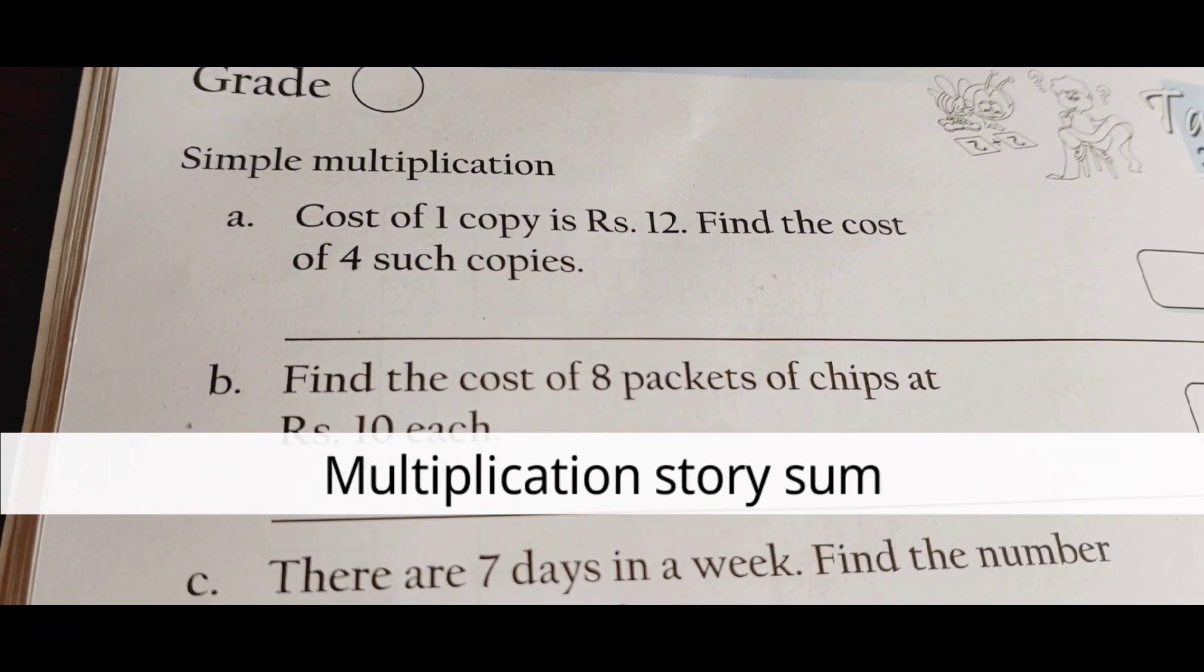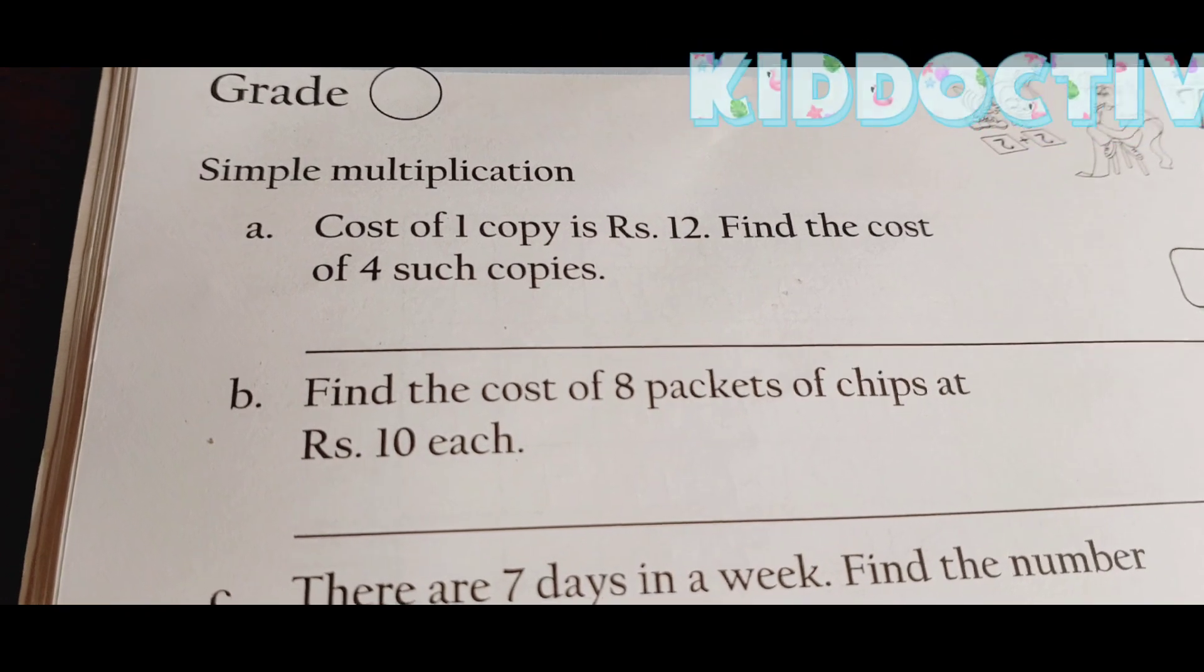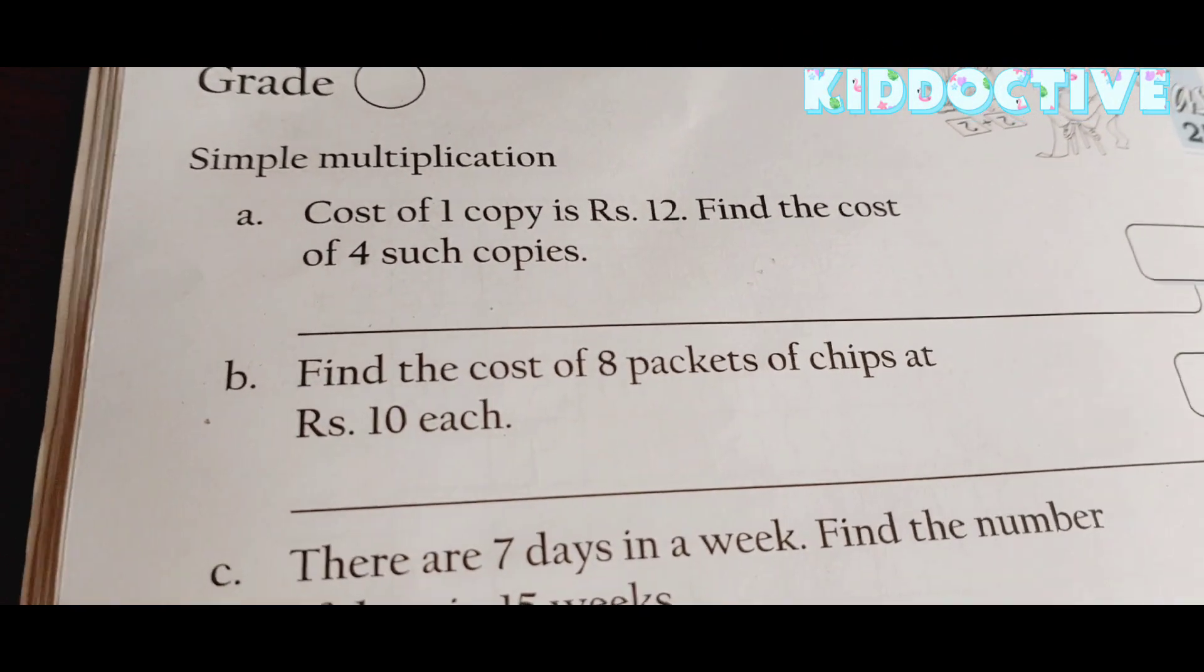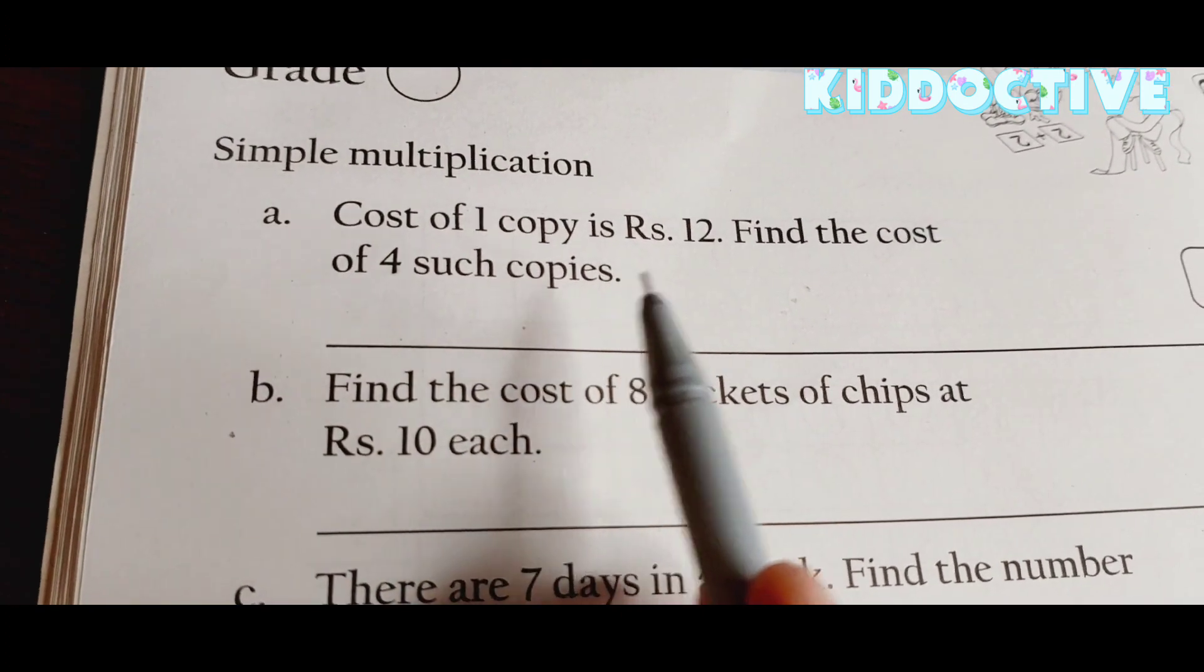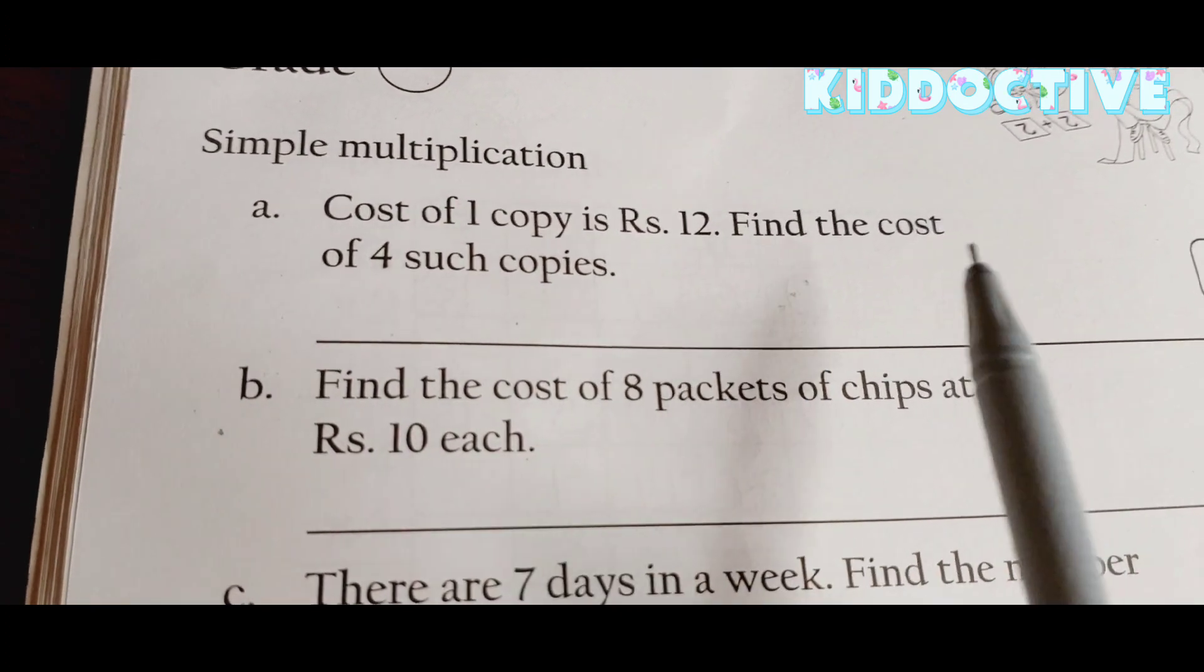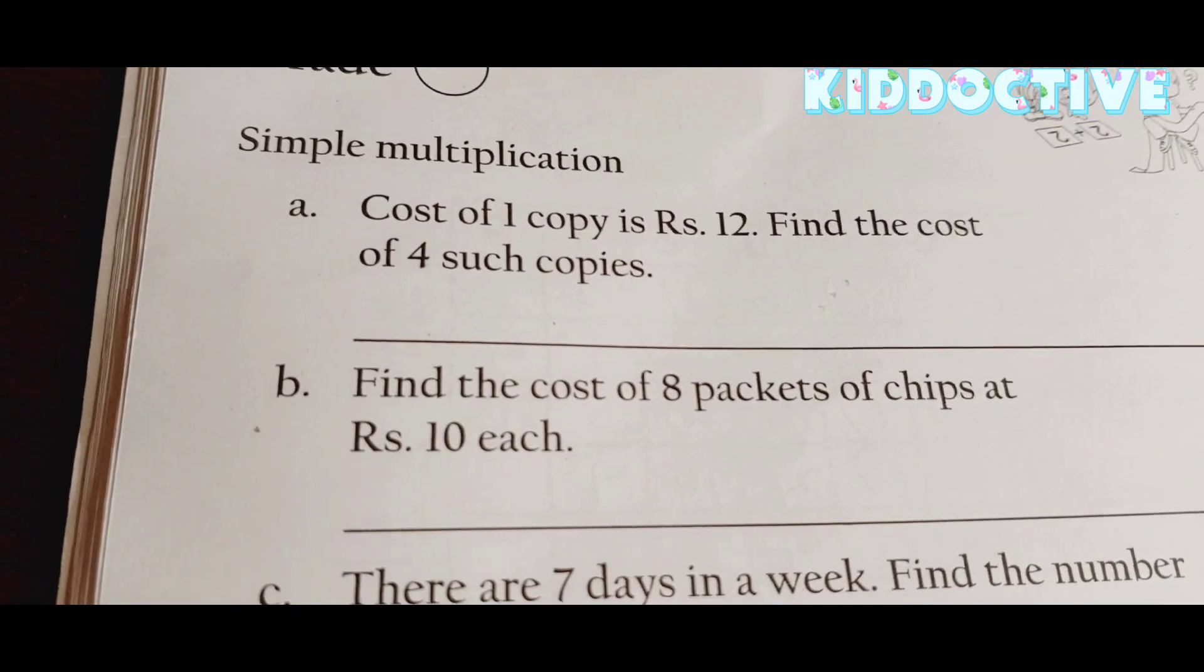Today we are going to solve these simple multiplication story sums. The first problem states: cost of one copy is 12 rupees, find the cost of four such copies.